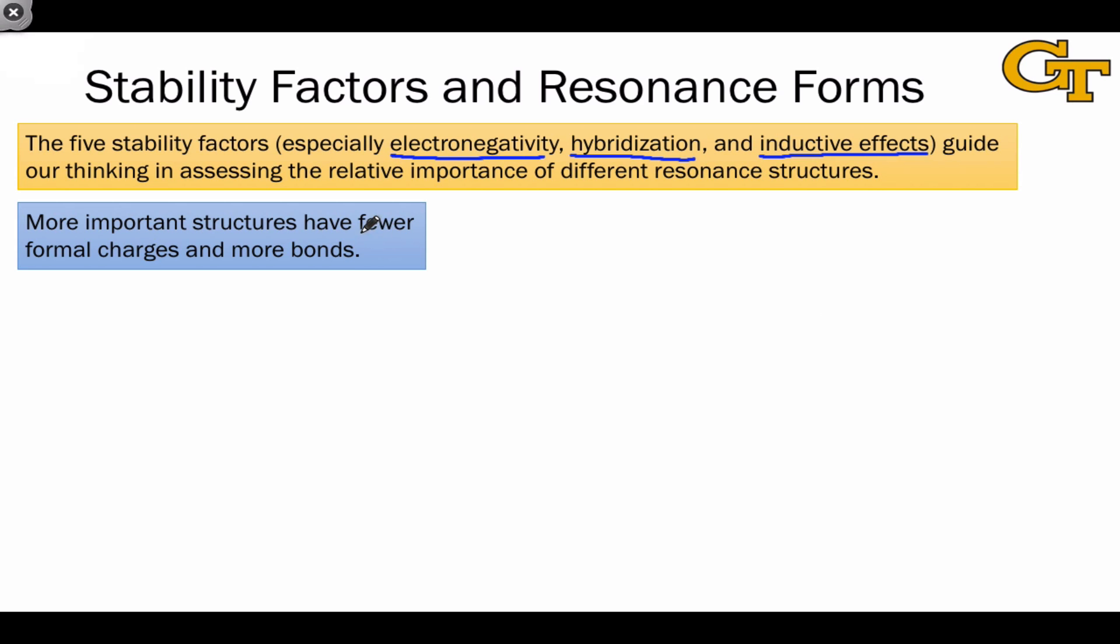Let's look at some general guidelines on this slide and some examples of these guidelines in action. The first guideline is that more important structures have fewer formal charges and more bonds. And these two ideas often go hand in hand. As an example, the carbonyl group is commonly depicted using a dipolar resonance form in which the electrons in the CO double bond have been pushed up to oxygen. Although the right-hand resonance structure does give us insight into how the carbonyl group reacts, the left-hand structure is far more important since every atom obeys the octet rule in this structure and all atoms are formally neutral.